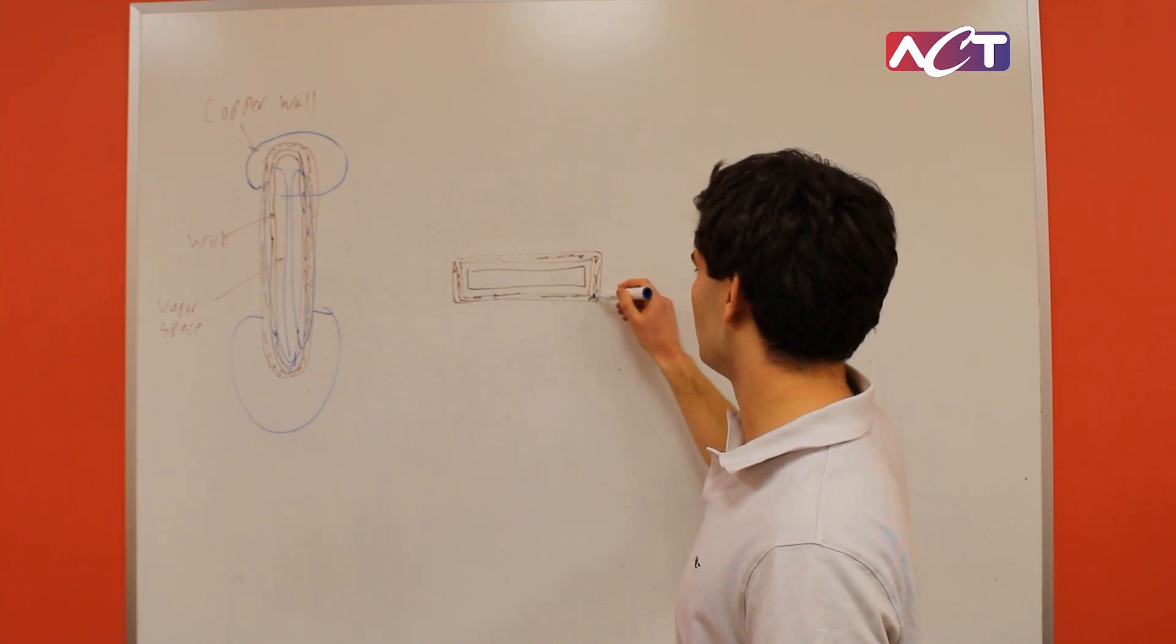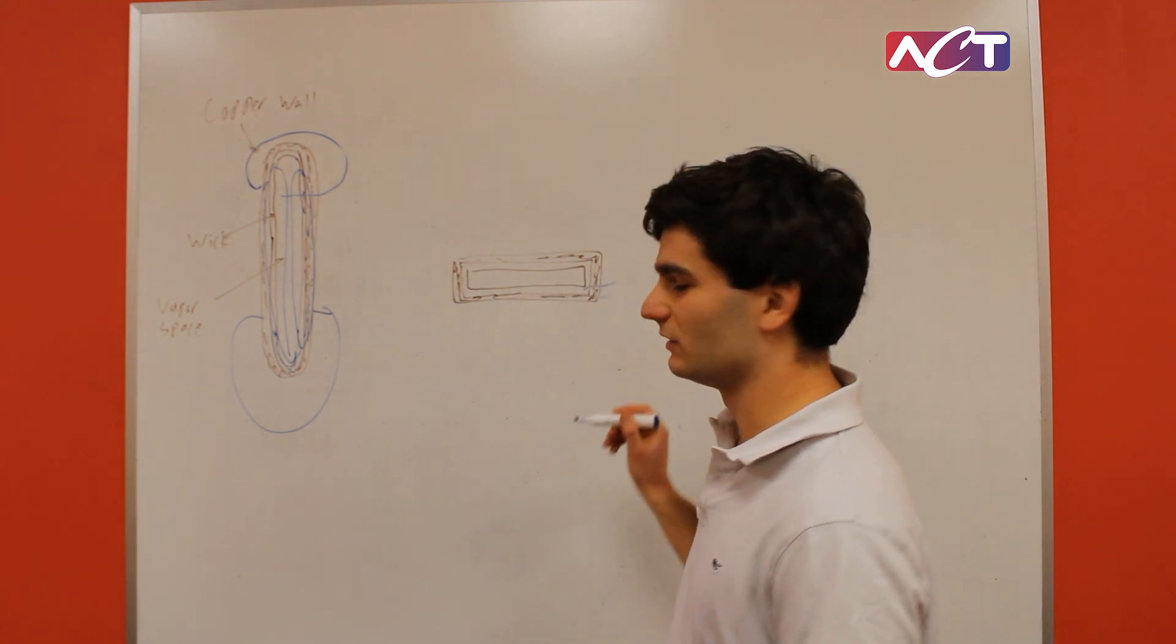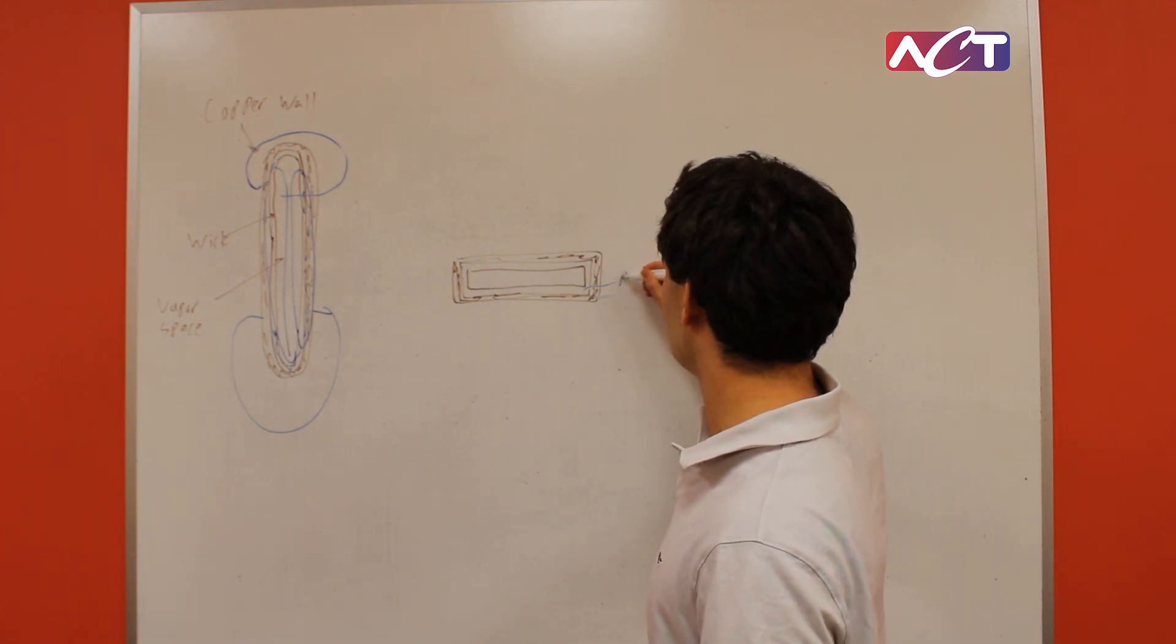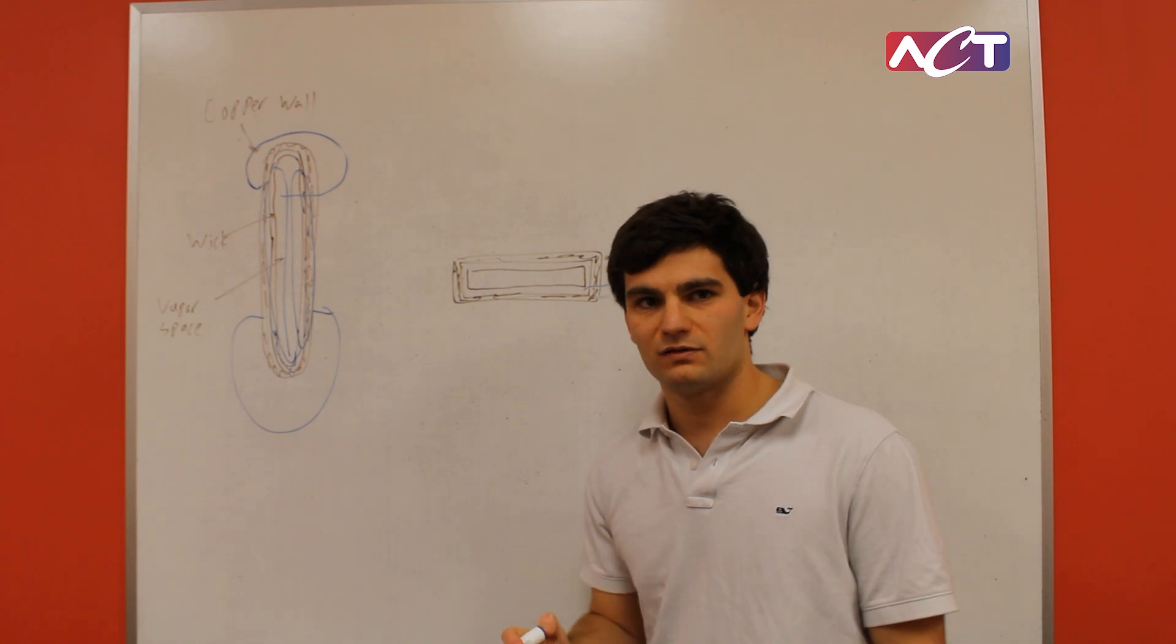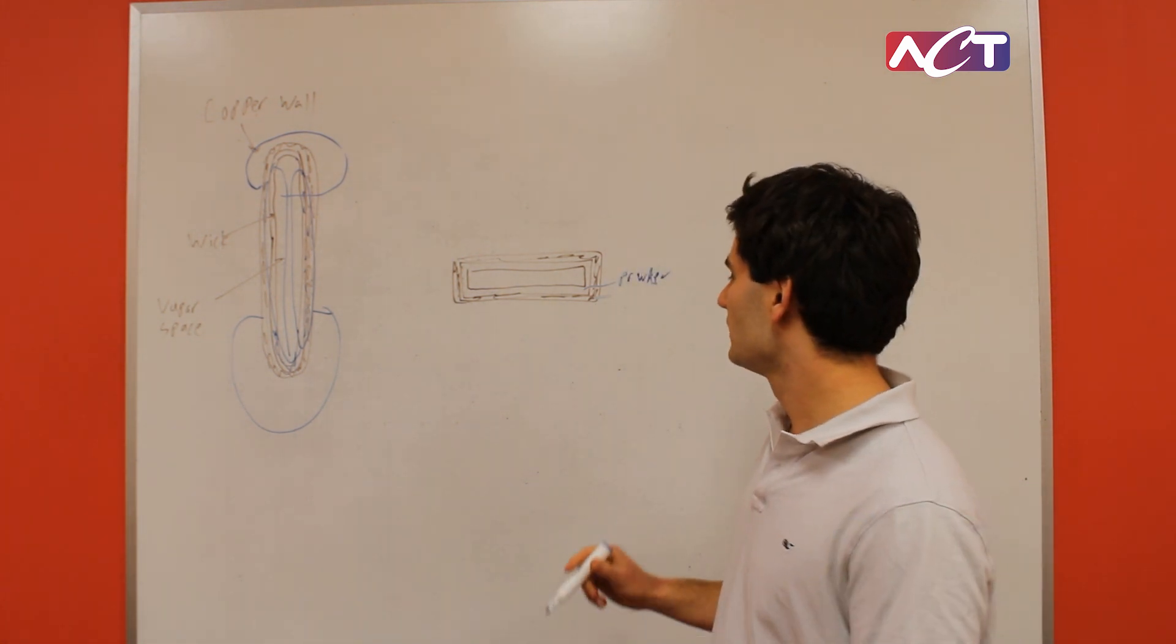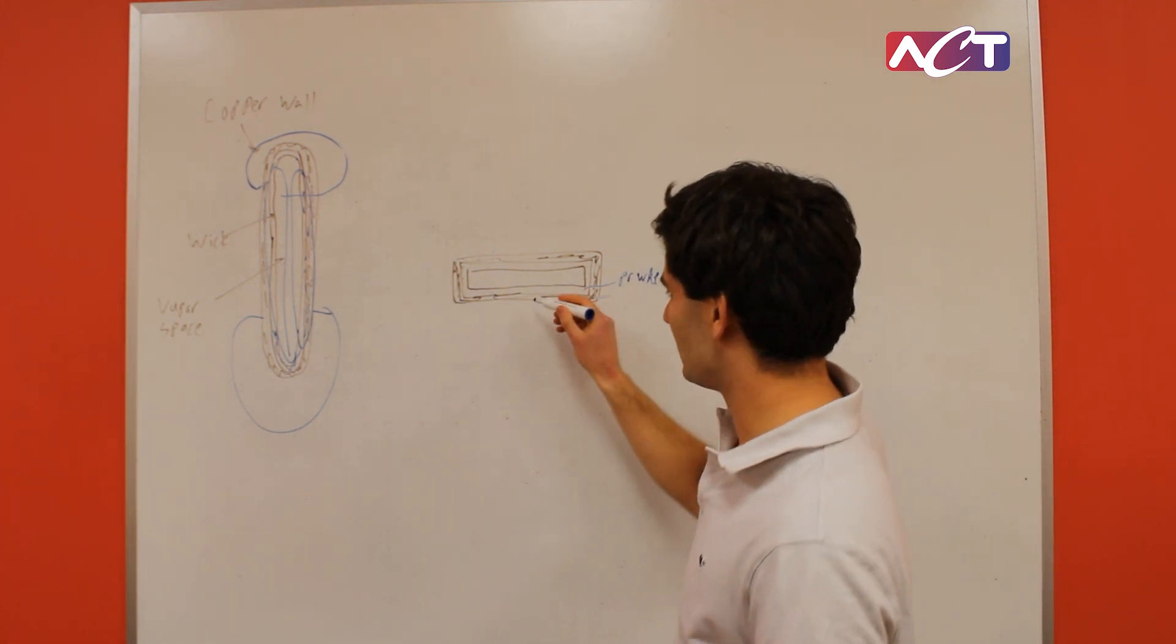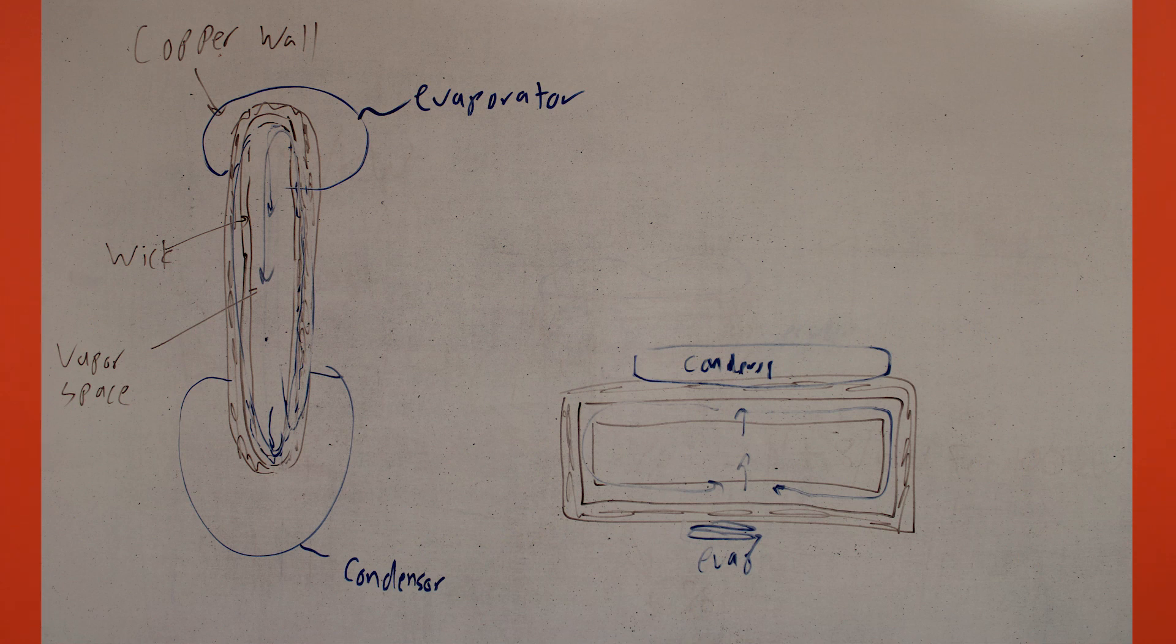We have a copper wall, and then you have some sort of wick. Typically the wick is going to be some sort of powder wick since the screen doesn't really work as well for this geometry here. Same exact idea, you have some sort of evaporator, some sort of condenser.